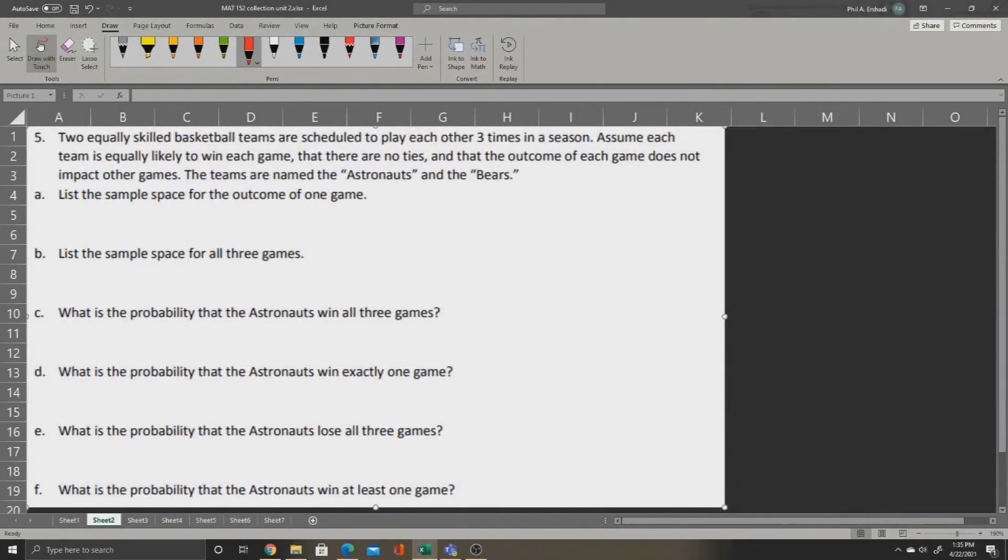In this question, two equally skilled basketball teams are scheduled to play each other three times in a season. Assume each team is equally likely to win each game, that there are no ties, and that the outcome of each game does not impact the other games. The teams are named the Astronauts and the Bears.